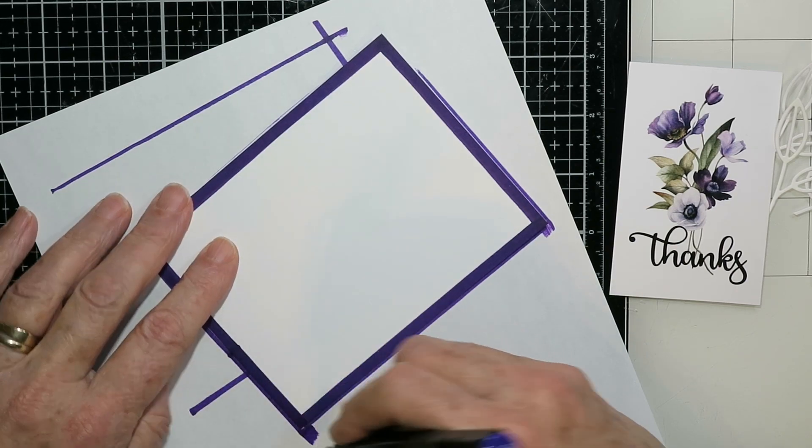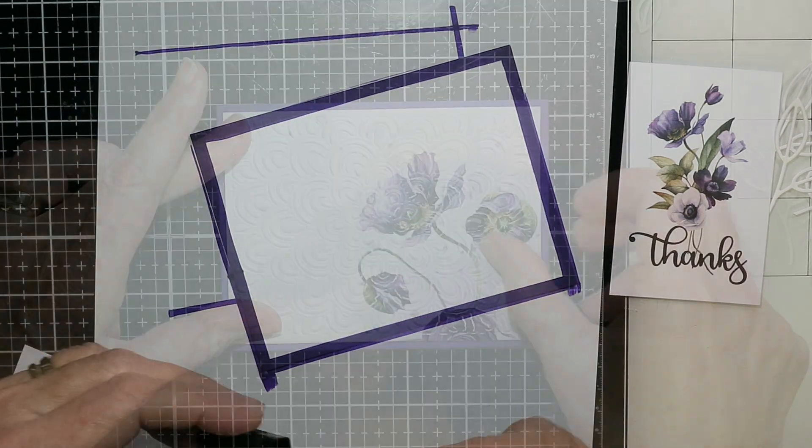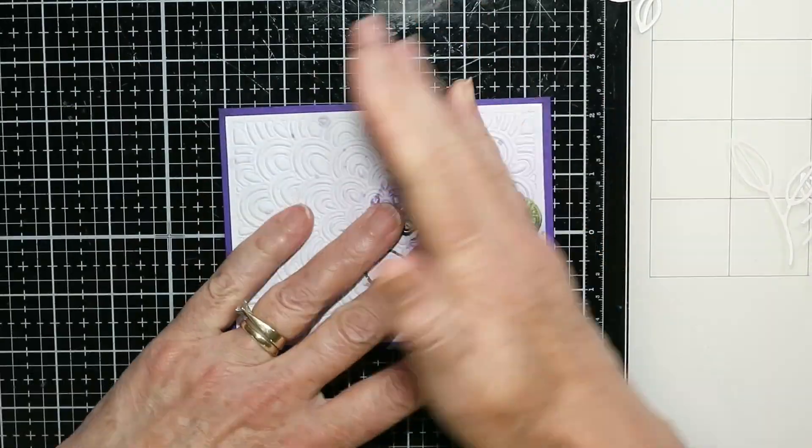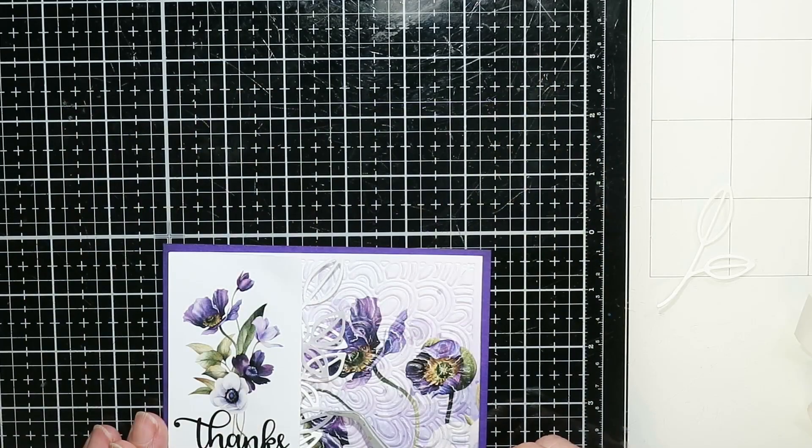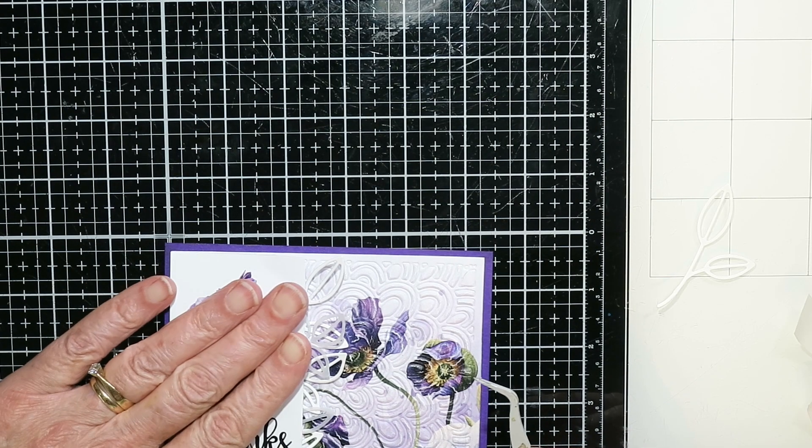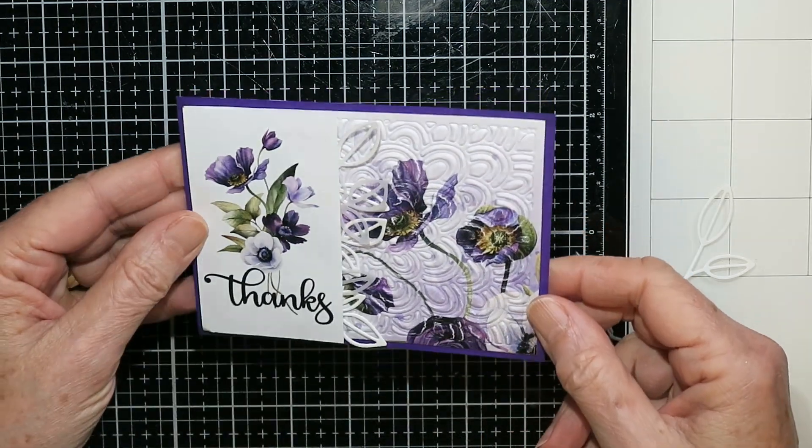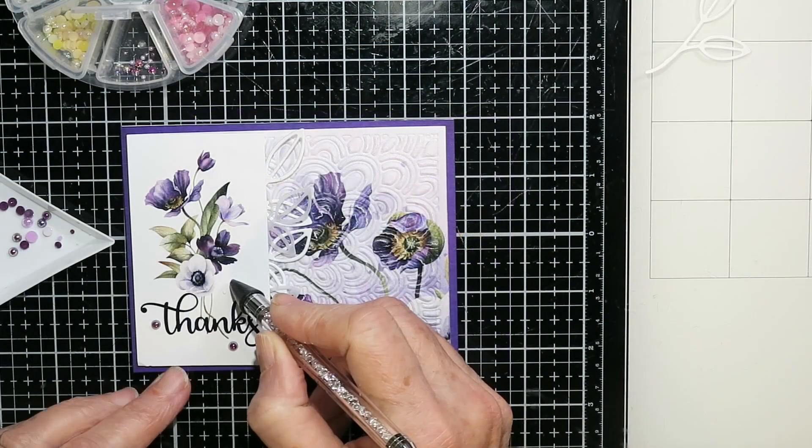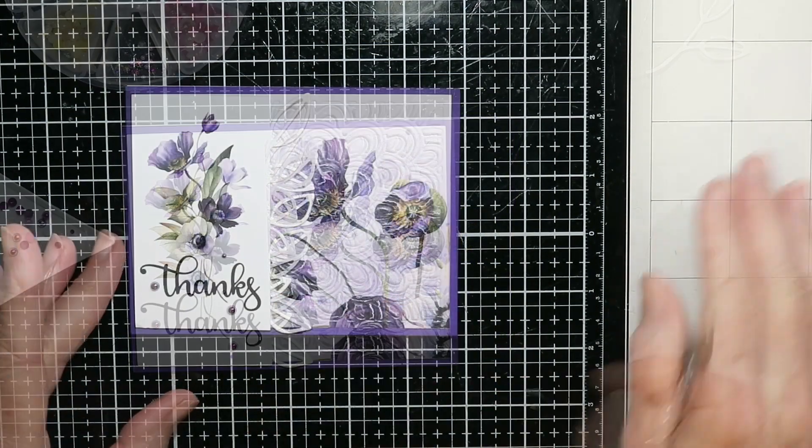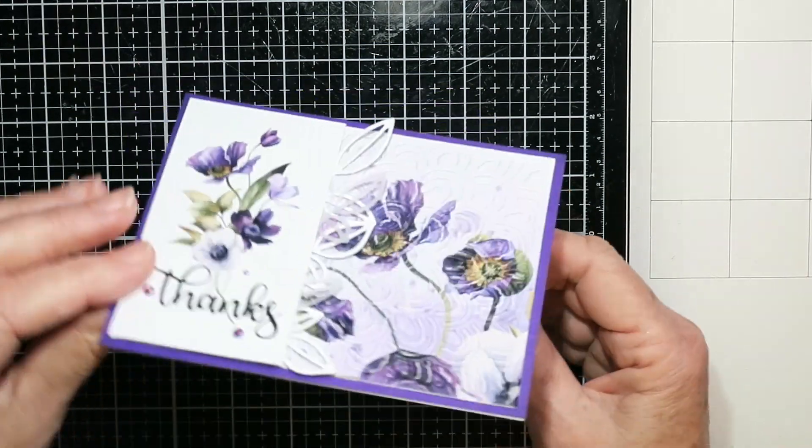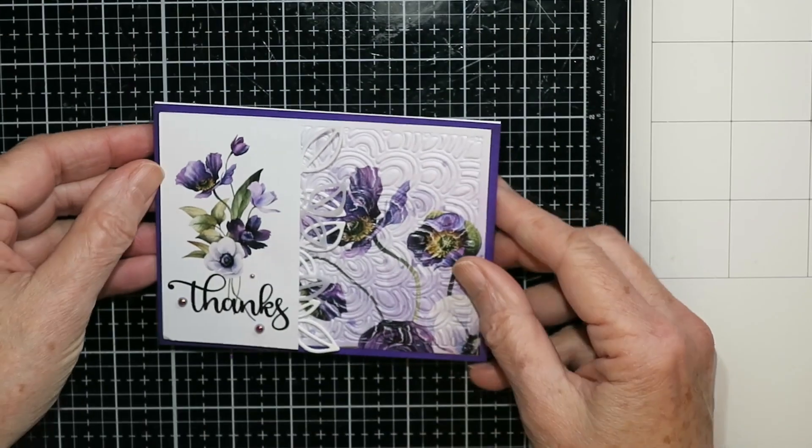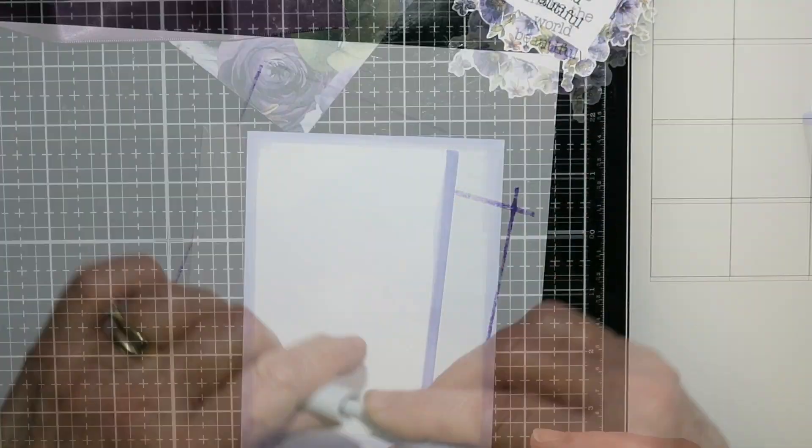So I took an alcohol marker and I just went around the edges. I just tried to pick a coordinating purplish color. And I've glued that down. And I cut out some of these leaves. I'll have everything listed down below, but I cut a few out of white cardstock and some out of vellum. And then I've just added on a few little pearls onto that one. And it's a top folding card. So that's the first one.